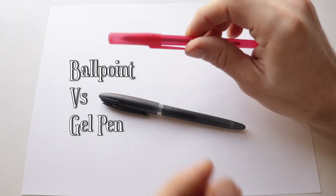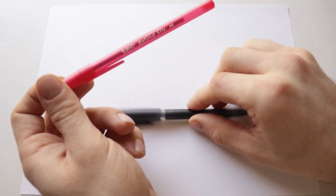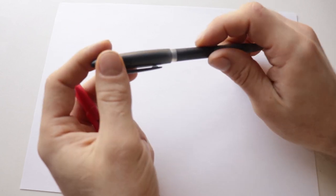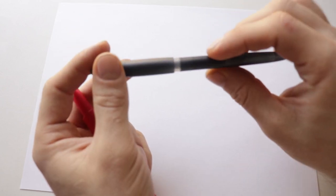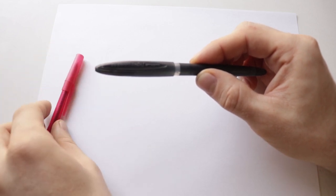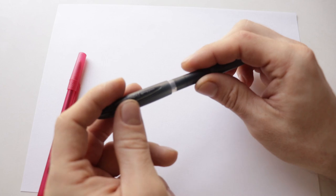Ballpoint pens have an oil-based ink, whereas rollerball pens such as this have a looser and smoother writing feel. These rollerball gel pens are less likely to skip than what you will have with your standard ballpoint pen.